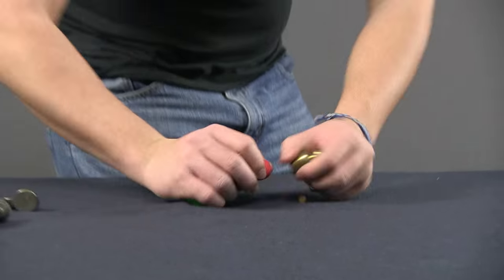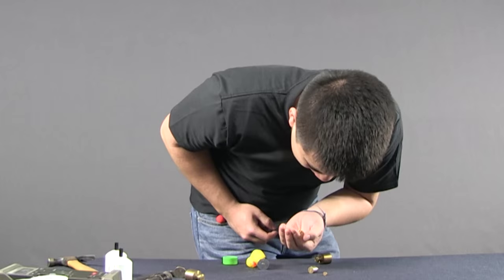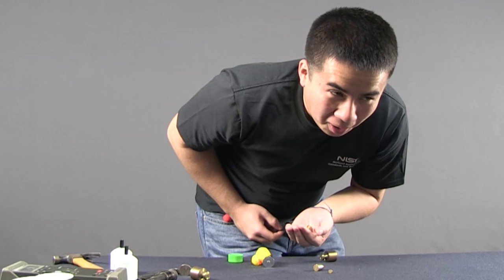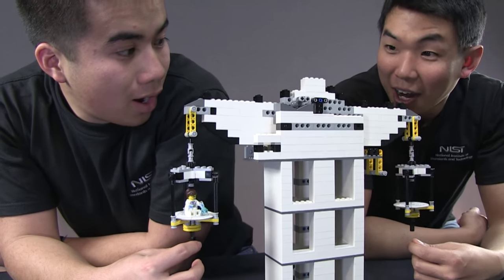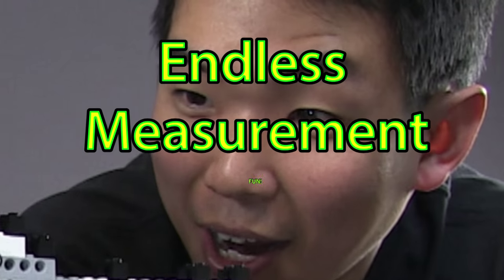Don't settle for calibrated mass artifacts. Dropping, chipping, or even sneezing on them will change their mass and require a new calibration. Only the NIST DIY Watt Balance can be used again and again and again and again for endless measurement fun.